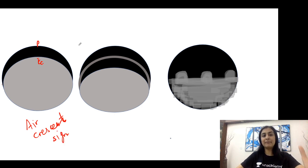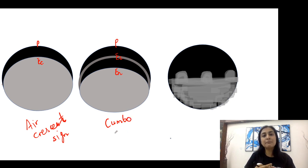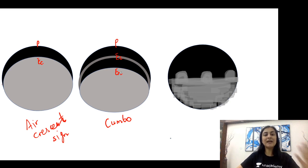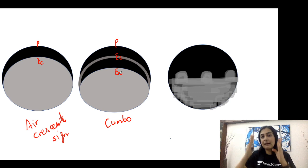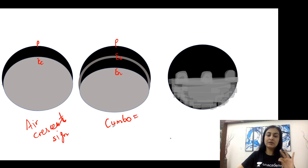When air is already present between pericyst and ectocyst, and additional air enters between the ectocyst and endocyst, two layers of air are visible — this is the combo sign, also called the onion peel sign, due to its multi-lamellated appearance. The onion peel sign is also seen in Ewing's sarcoma, where it describes a multi-lamellated periosteal reaction in aggressive bony tumors occurring in the diaphysis during the first and second decade of life.